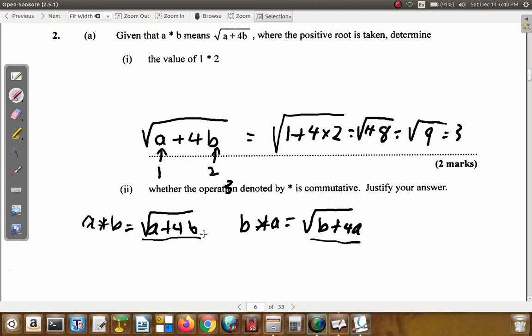Now, is A plus 4B the same as B plus 4A? Let's see. If you say the square root of A plus 4B is equal to the square root of B plus 4A. If you square both sides, then A plus 4B is equal to B plus 4A.